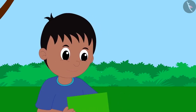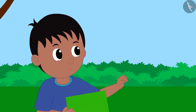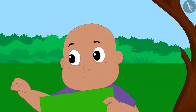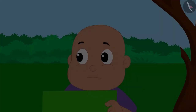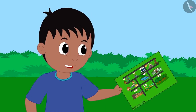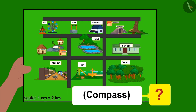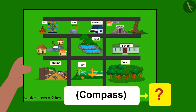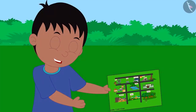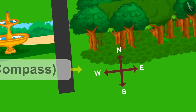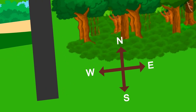Raju asks Bablu if he can't spot the compass given on the map. Bablu says no and asks where it is. Raju then takes a look at Bablu's map and realizes there is no compass on it. He explains that a compass like this is given on every map, and shows Bablu the compass drawn on his own map.